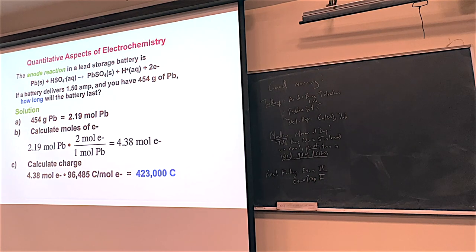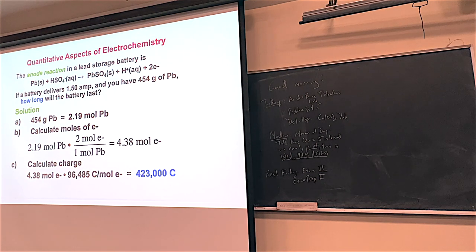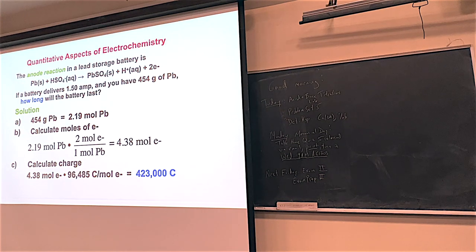We left off with this example on Wednesday, and I want to go through it one more time. There are two more really important parts I want to talk about today, and this is the first one: quantitative aspects of electrochemistry. Quantity means how much. In this kind of a problem, we're using electricity to make some kind of transformation possible. In this example, this is actually a reaction used in a battery.